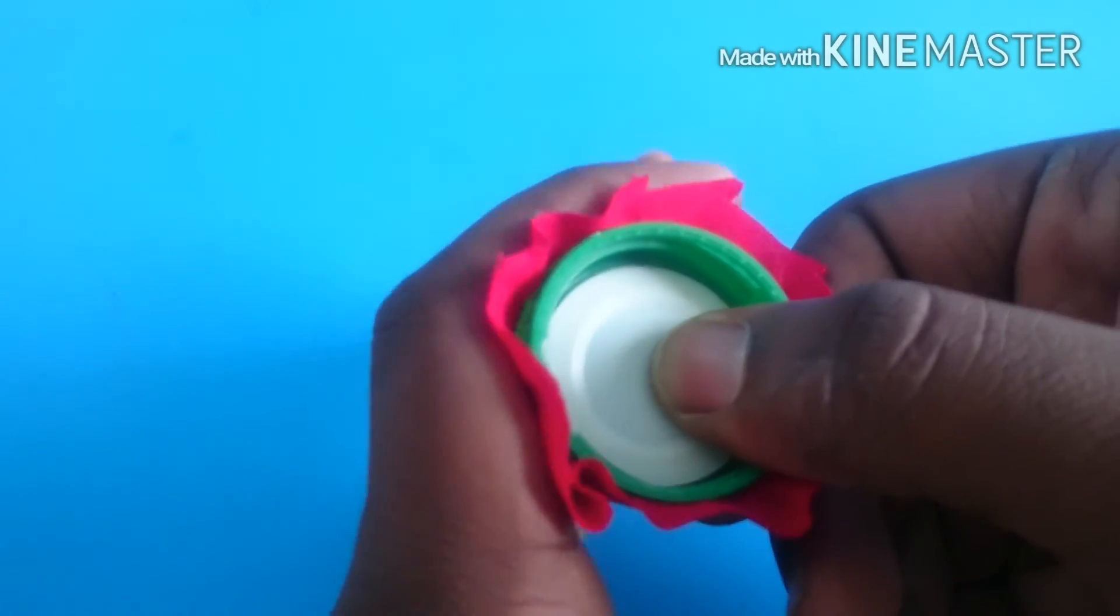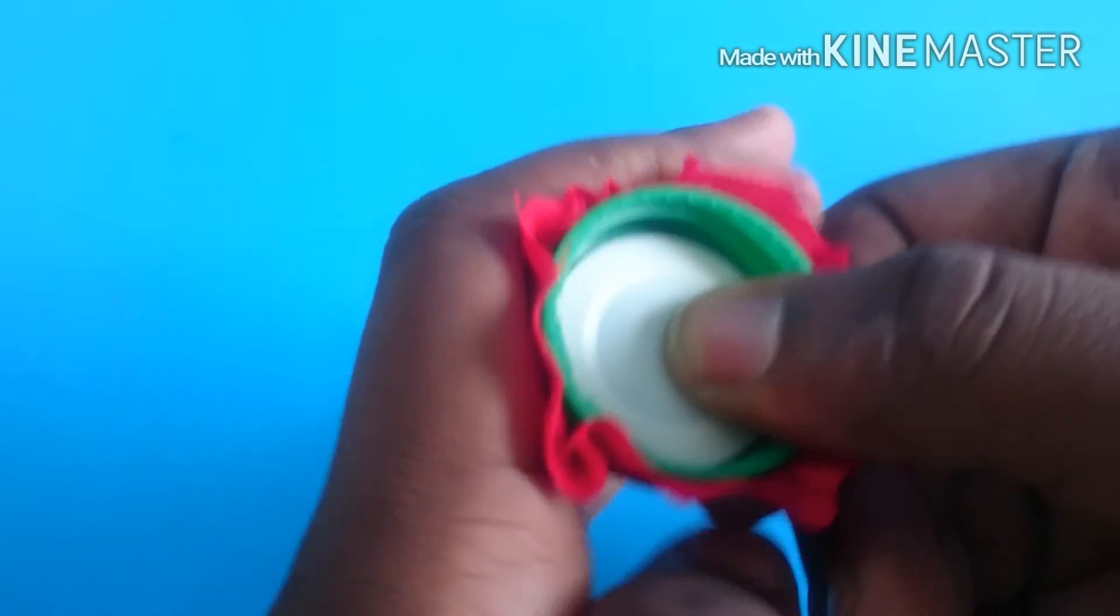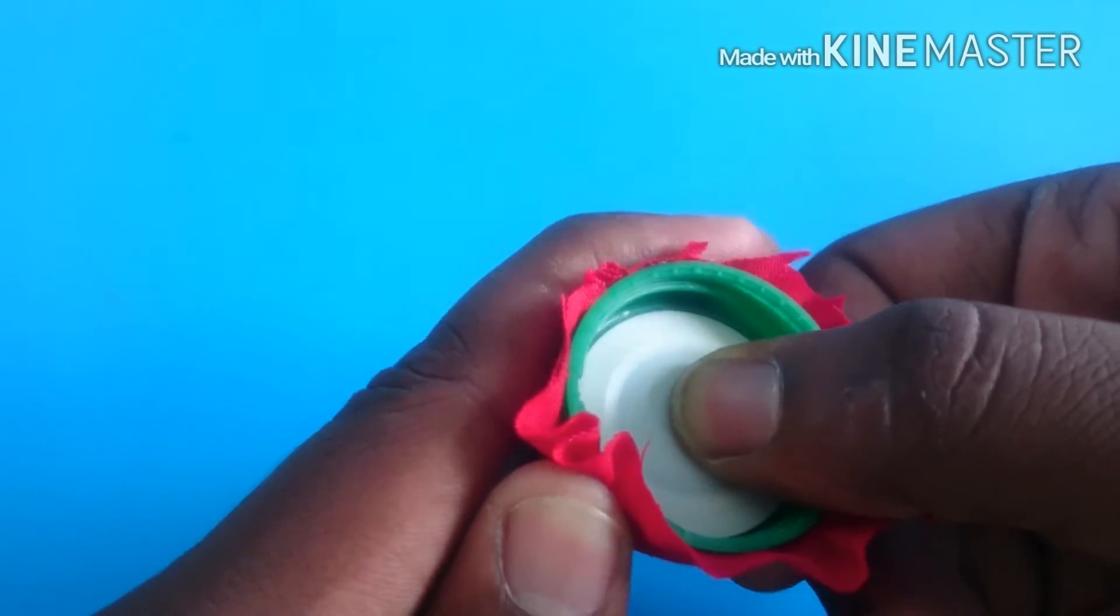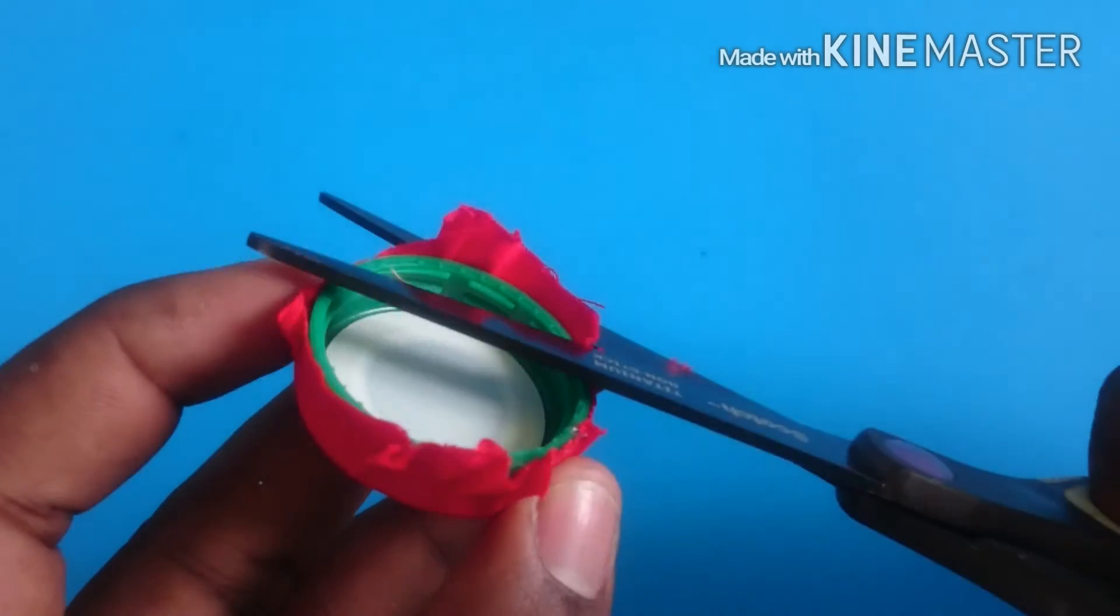Now I'm going to cut off any excess fabric, leaving a small border around it. Then glue it onto the rim of the cap. Next, trim off any excess fabric.